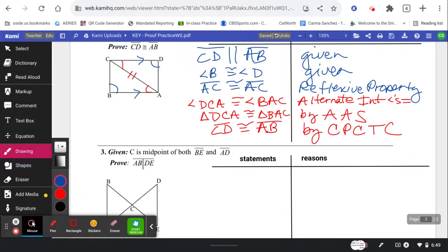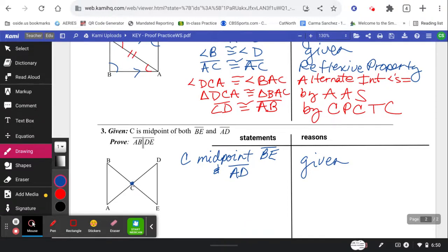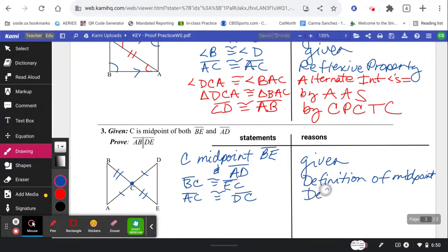All right, pause the video. Try the next one. You're getting good at these. C is the midpoint of BE and AD. So C is the midpoint. That means this is equal to this and this is equal to this. So let's go state that. BC congruent to EC, definition of midpoint. And AC is congruent to DC, definition of midpoint.